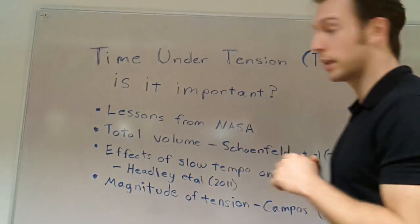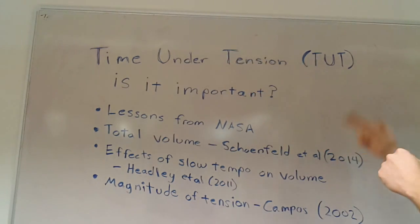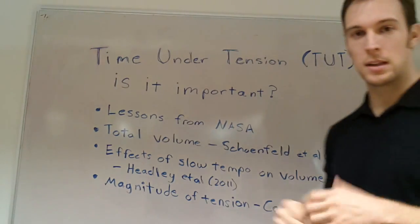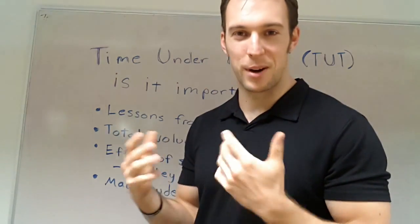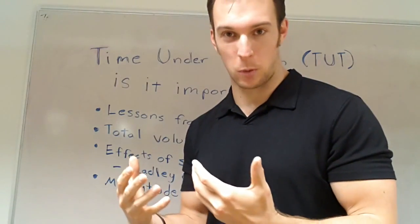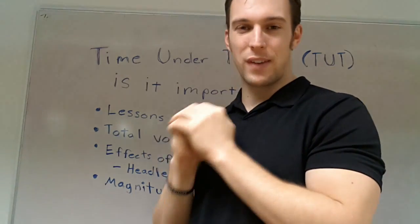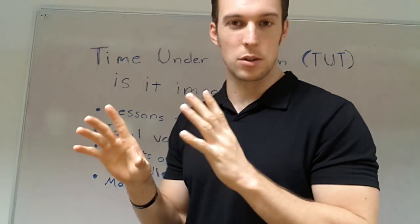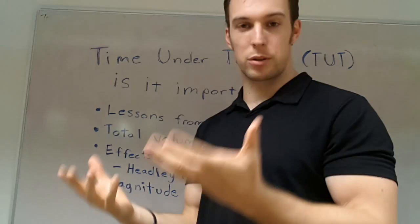Is time under tension the only variable we need to pay attention to? Probably not. The first bullet point here is lessons from NASA. Astronauts leave the Earth's gravity, and this is the fastest possible way to lose muscle. You start losing all kinds of lean tissue when you leave the confines of gravity, because where does tension come from but gravity?